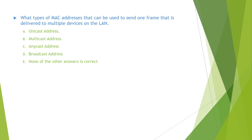What types of MAC addresses can be used to send one frame that is delivered to multiple devices on the LAN? Unicast address is a type of MAC address that represents a single computer, so if a frame is sent to a unicast address, a single computer will receive it. Multicast address is a type of MAC address that represents a group of computers, so if a frame is sent to a multicast address, a group of computers will receive it.